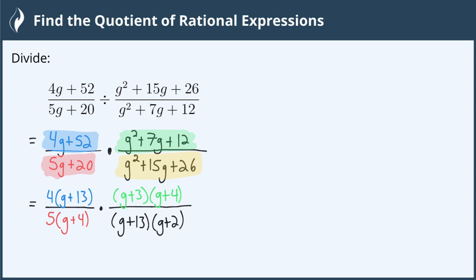Now, we can go ahead and cancel anything that is on both the top and the bottom of these fractions. So g plus 13 is on the top and on the bottom, so we can cancel those. Similarly, g plus 4 is on the top and the bottom, so we can cancel those.